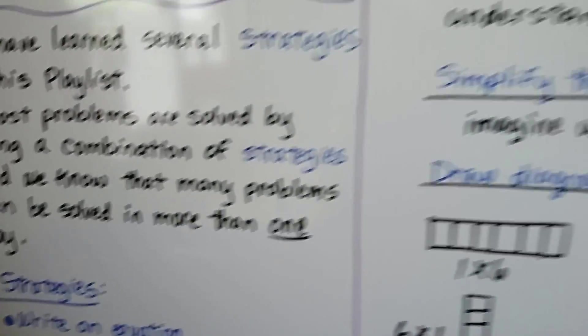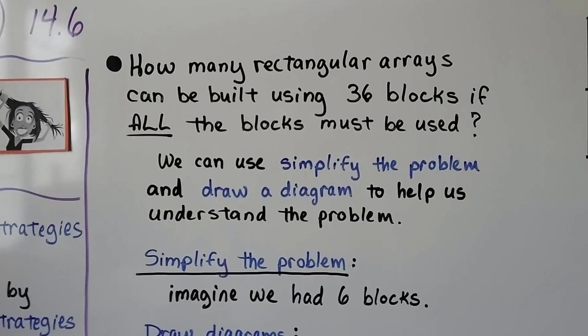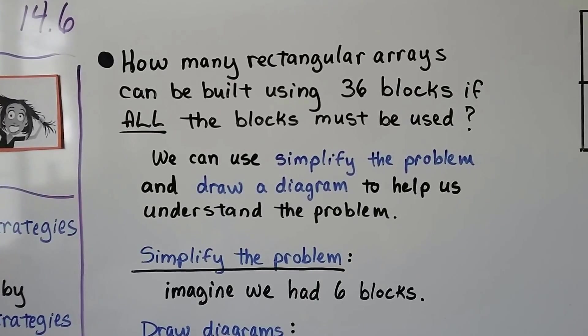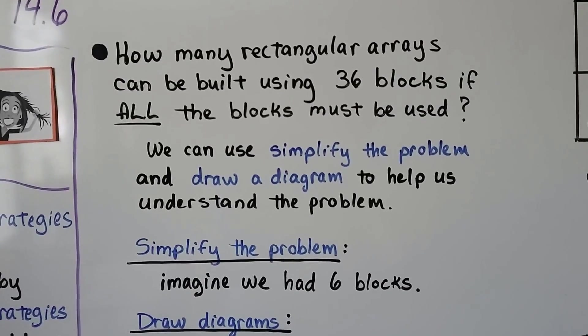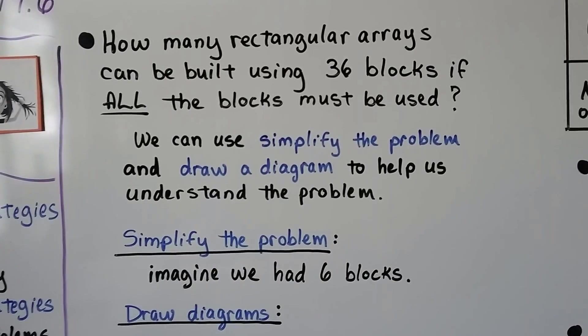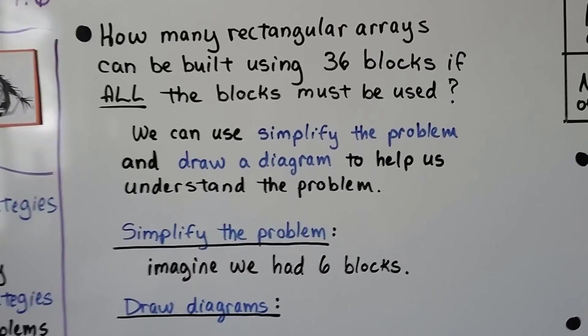Here's the problem we're going to try to solve: How many rectangular arrays can be built using 36 blocks if all the blocks must be used? We can use simplify the problem, that strategy, and draw a diagram to help us understand the problem.